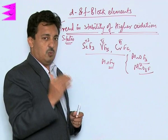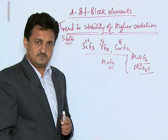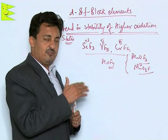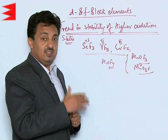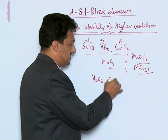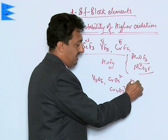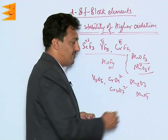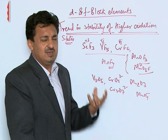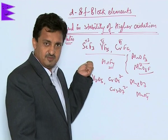However, these elements are not commonly existing as fluorides in their highest oxidation states. Rather, they are more stable and more commonly exist in their highest oxidation states in the form of their oxides — such as vanadium as V₂O₅, chromium as CrO₄²⁻ or Cr₂O₇²⁻, and manganese as Mn₂O₇ or MnO₄⁻.